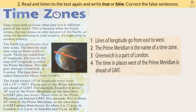The Earth rotates 15 degrees of longitude every hour — 24 times 15 degrees equals 360 degrees. Places east of the prime meridian are ahead of GMT. For example, Istanbul is about 30 degrees east of the prime meridian, so the time there is GMT plus 2 hours. Places west of the prime meridian are behind GMT. For example, Rio is about 45 degrees west of the prime meridian, so the time there is GMT minus 3 hours. So when it is 12 p.m. in London, it is 2 p.m. in Istanbul and 9 a.m. in Rio.